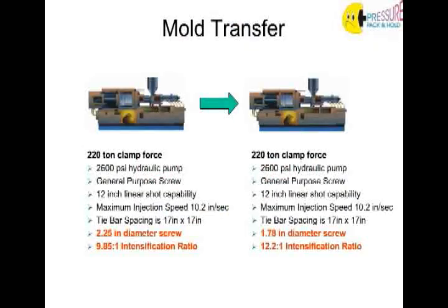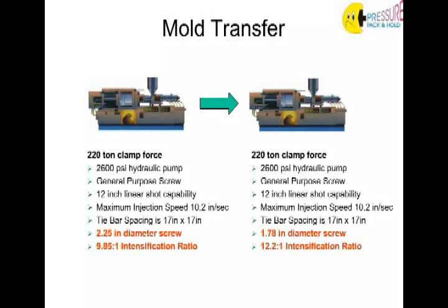To continue the example, we'll look at two seemingly identical machines. They're the same size, same clamp tonnage, same general purpose screw design, same shot capacity as far as linear travel of the screw. However, we need to pay attention to all the small print, because at the bottom of that list we see that they have two different size injection units and two different screws.